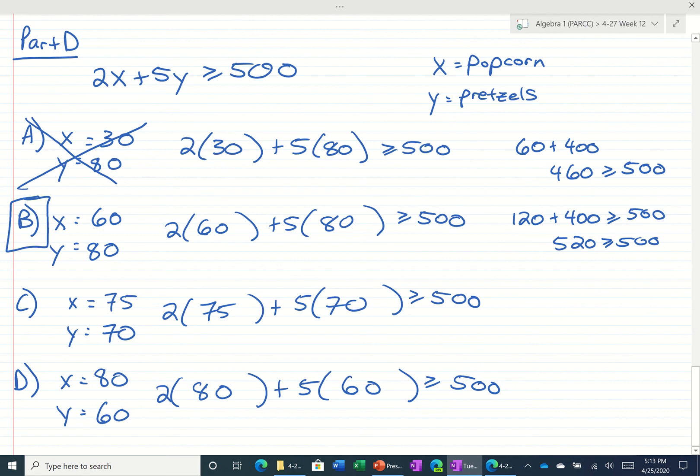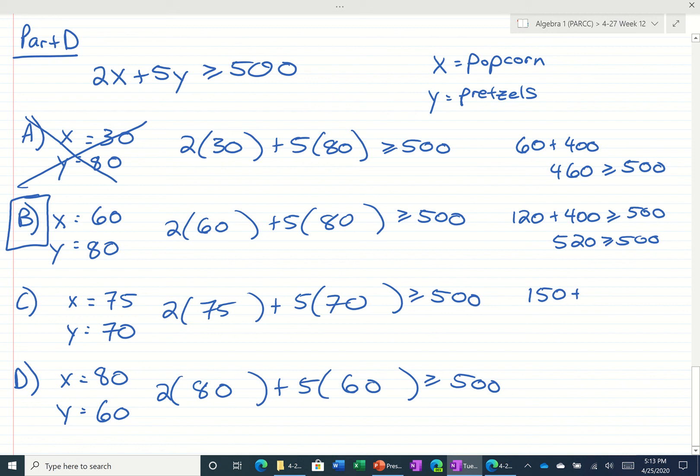So let's try the other ones just to make sure. $2 times $75 is $150 plus $5 times $70 is $350. So we have $500 is greater than or equal to $500. Yep, that's true. They could be equal.